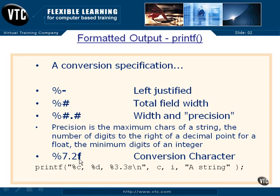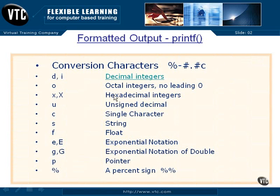Let's look at all these spec types that are in here — these are the actual conversion characters. A D or an I is a decimal integer, so you're going to print out whatever that value is on the right-hand side of the printf. It's going to be printed in a decimal form with either D or I.